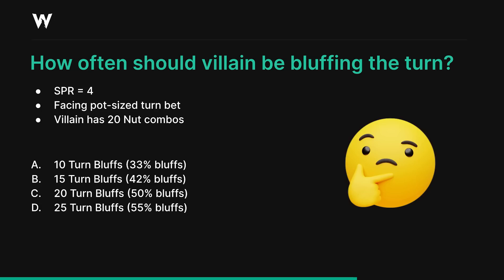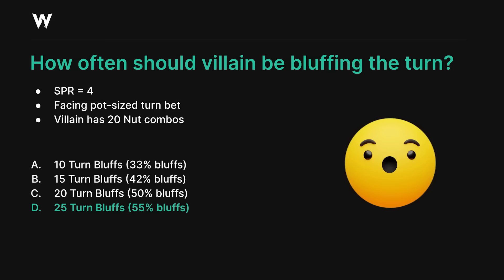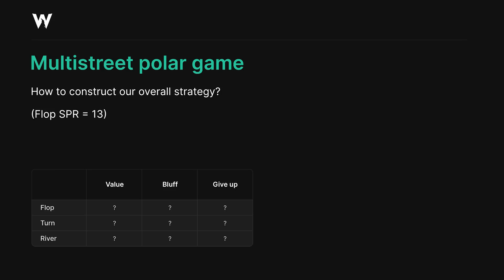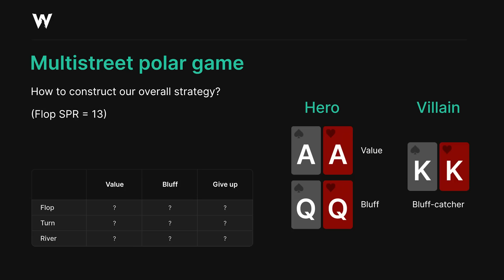The answer is D — 55%. They should actually be bluffing more often than they're value betting on the turn in order for us to have a break-even call with our bluff catcher. This brings us back to the power of leverage. The value-to-bluff ratio on the flop allows more bluffs than the turn, which allows more than the river. On each street we expect villain to give up with a portion of their bluffs so they're balanced by the river.